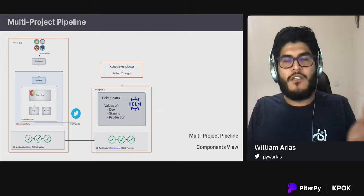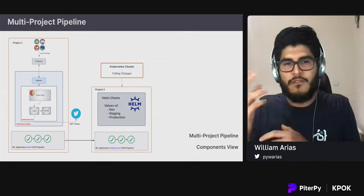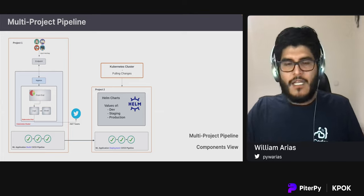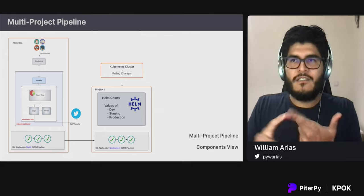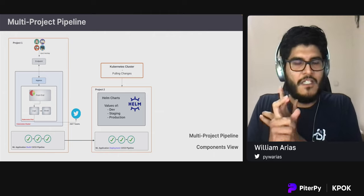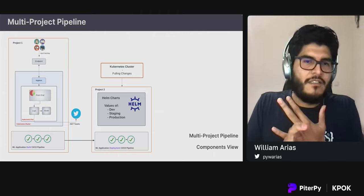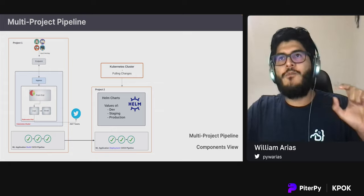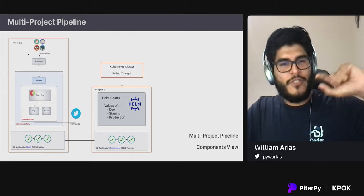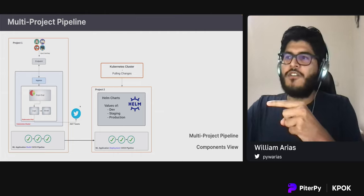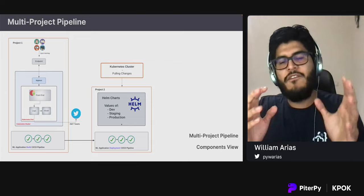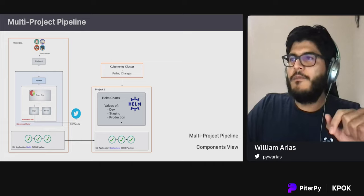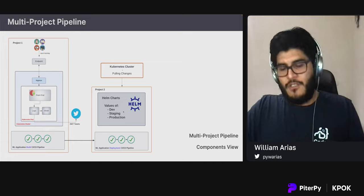In project one — the application with all the logic, API calls, and the model — I add unit testing, security scanners, and checks to ensure no secrets or tokens are committed. Only if that pipeline succeeds does it trigger the second pipeline, which updates the manifest files. Kubernetes will then eventually pull those changes and deploy the new application. This is achieved using what's called a multi-project pipeline.